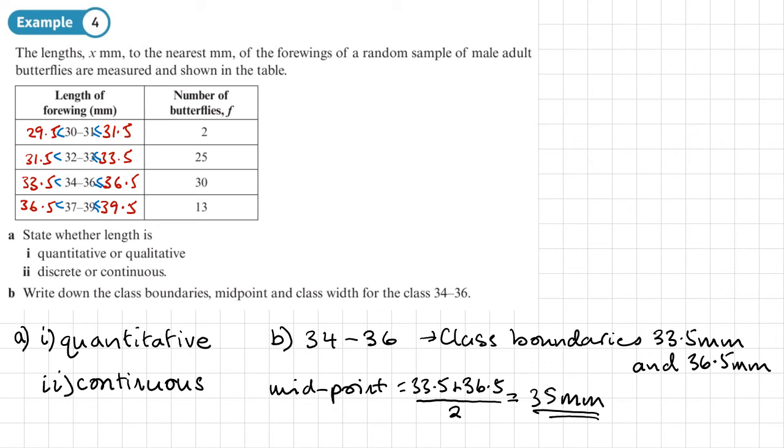OK, so this is the proper calculation, but we can also use this as well. And then the last thing we need to do is to find the class width. So that's the difference between the upper class boundary and the lower class boundary. So class width, that's going to be 36.5 minus 33.5. And that gives three millimeters.